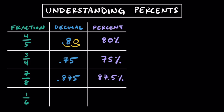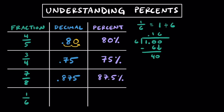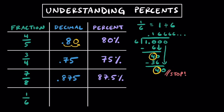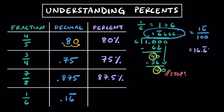Let's look at one more fraction: 1 to 6. Fractions and ratios really just represent a quotient, so 1 over 6 really means 1 divided by 6, and if we do this long division, you're going to notice that this is going to repeat forever. Once you see the remainder repeat, we know that we're going to have a repeating decimal. Because 6 goes into 40 six times, we're going to see this 6 repeat forever. To represent this, we can draw a bar over the 6 to show that this repeats forever. 1 sixth is equal to 0.16 repeating. We can write this as a ratio of 16.6 repeating per 100, and since percents are per 100, we can write this as 16.6 repeating percent.